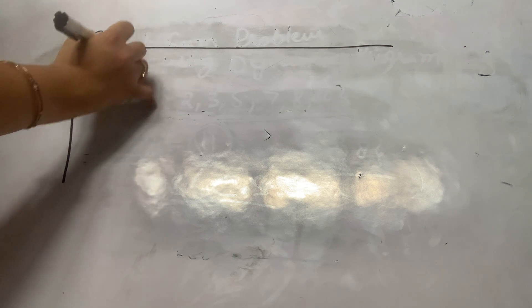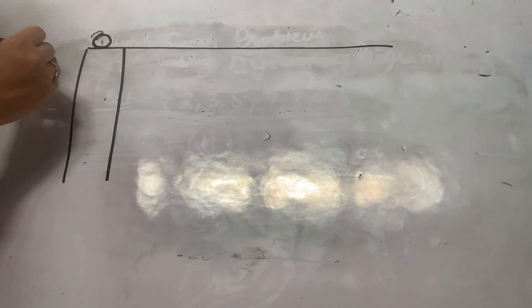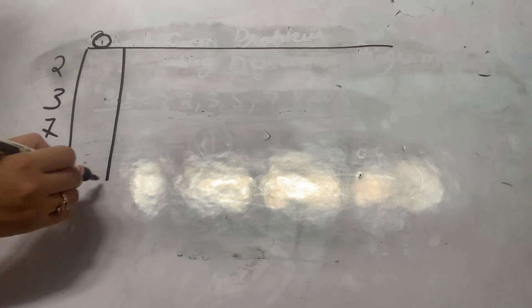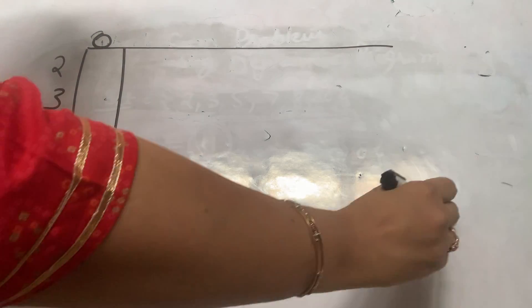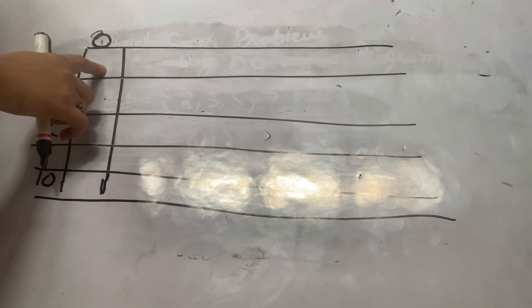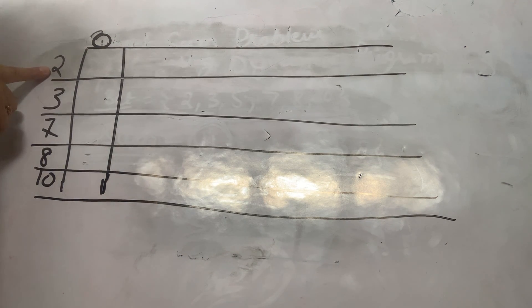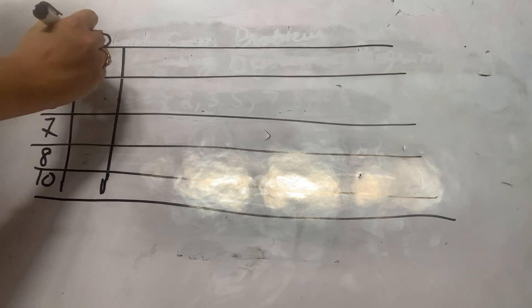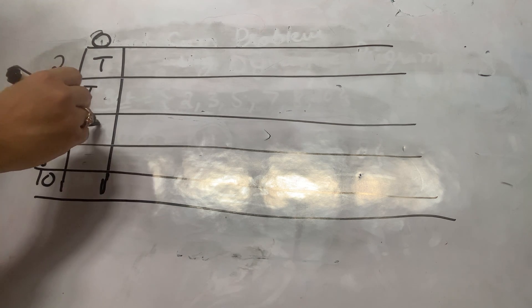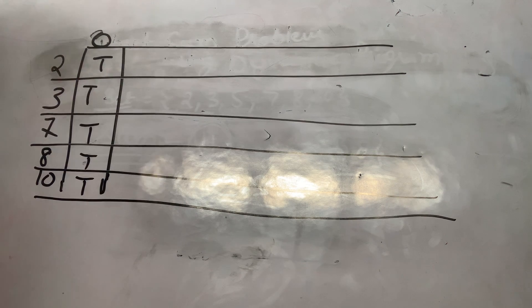We check all possibilities in the form of a table. I am creating a table where the columns represent the sum values and the rows represent the elements of the set: 2, 3, 7, 8, and 10. An empty subset can give a sum of 0, so the entire 0-sum column becomes true for all rows.